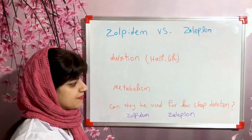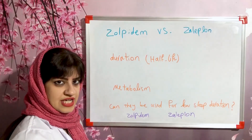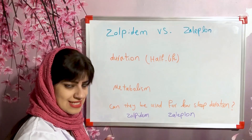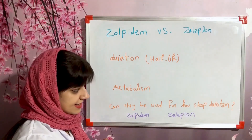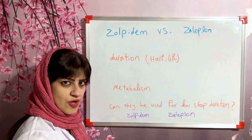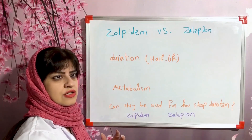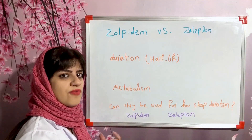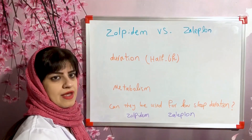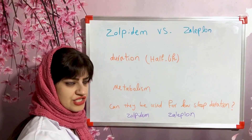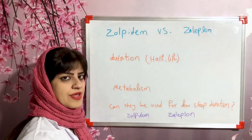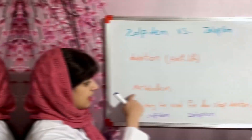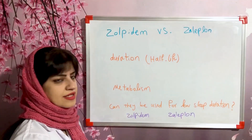However, zolpidem can be used for increasing the duration of sleep under two conditions: first, the patient needs four or more hours to sleep; and second, they should avoid doing jobs that require alertness for more than five hours. Based on these two conditions, zolpidem may be used for increasing sleep duration.